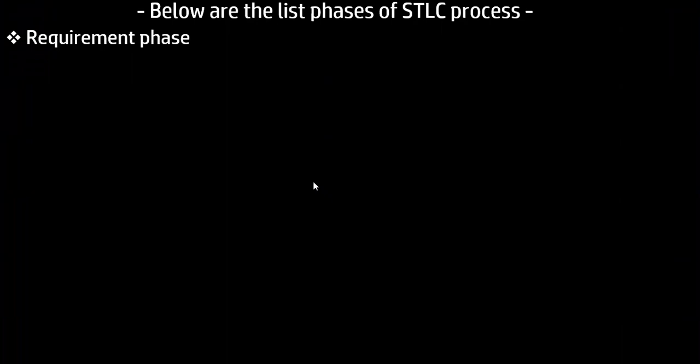The first phase of the Software Testing Life Cycle is the Requirement Phase. In this phase, we understand and analyze the requirements, and have brainstorming sessions with teammates and other team members to find out whether the requirement is testable or not. This phase also helps us to identify the scope of testing. If any feature is not testable, we can communicate that during this requirement phase.